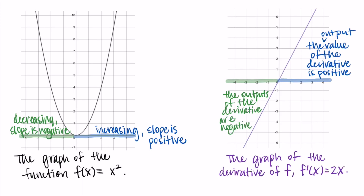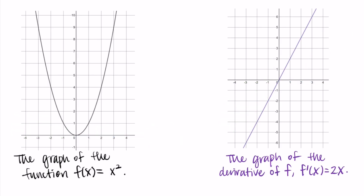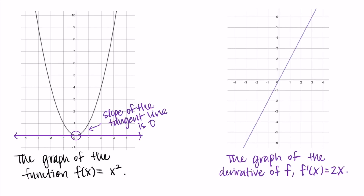Let's look at the point (0, 0) on the graph of f. At this point the tangent line is horizontal, so the slope is zero. This should be reflected on the graph of the derivative — and the output value of the derivative is zero as well.